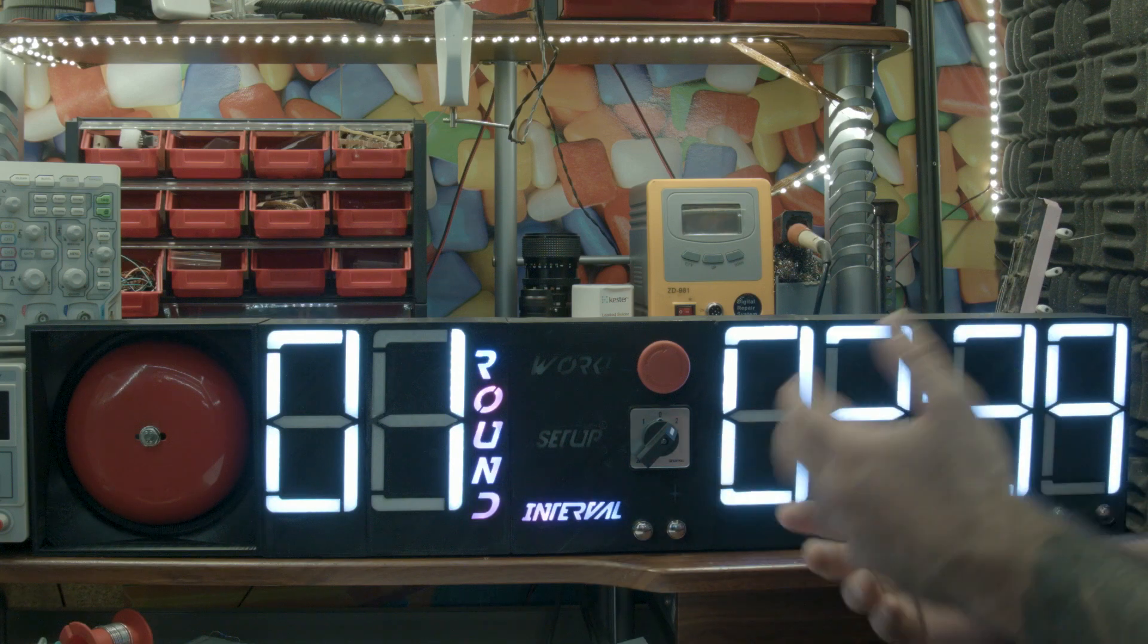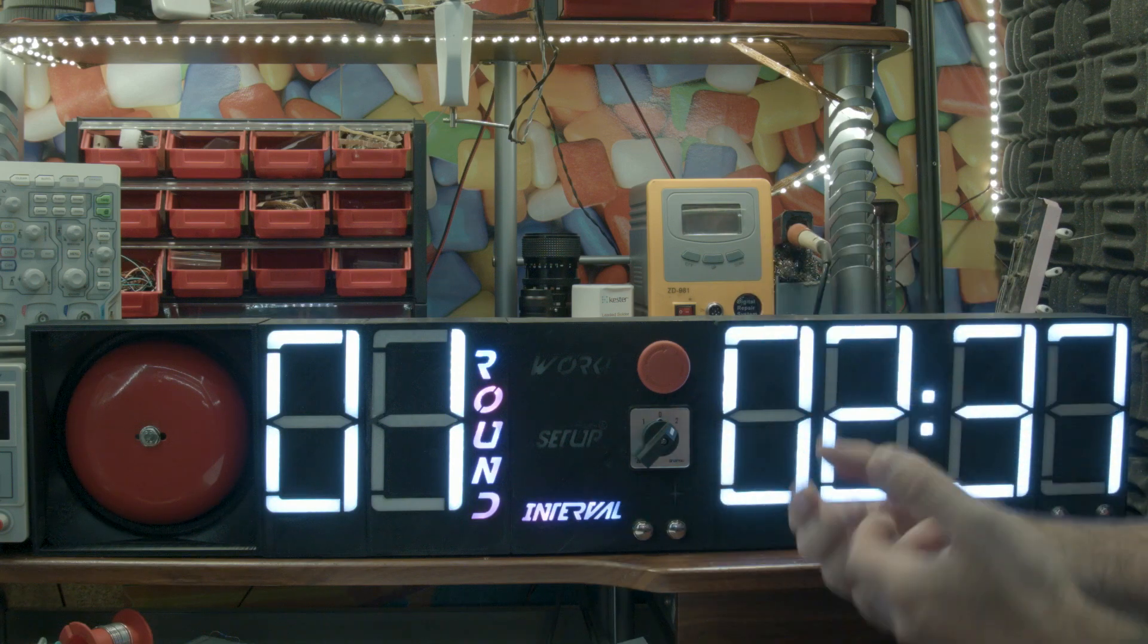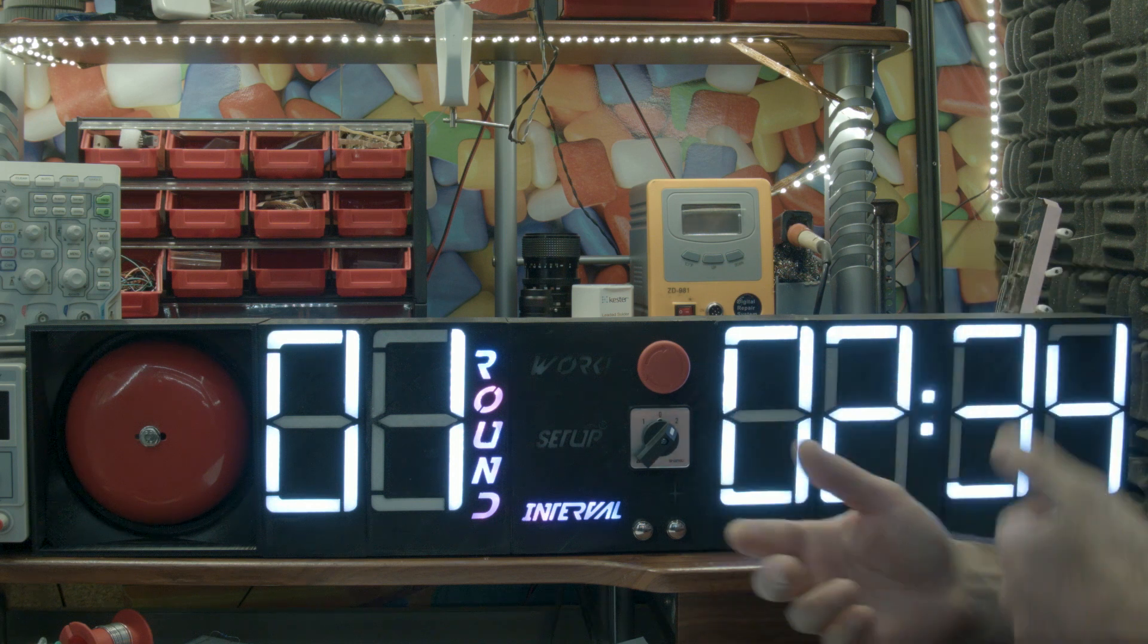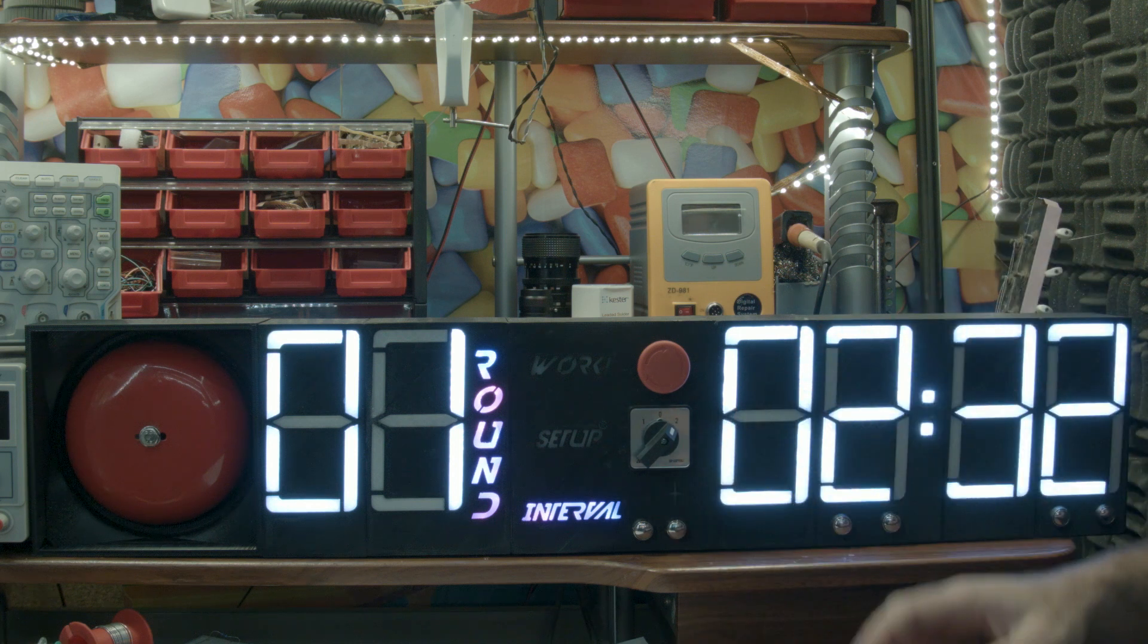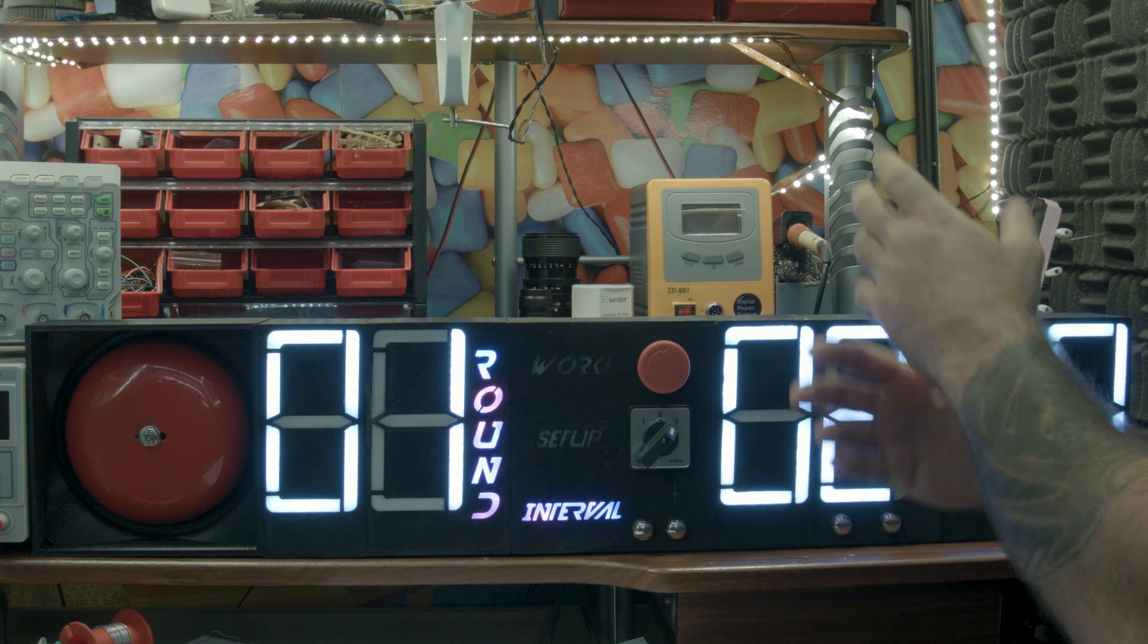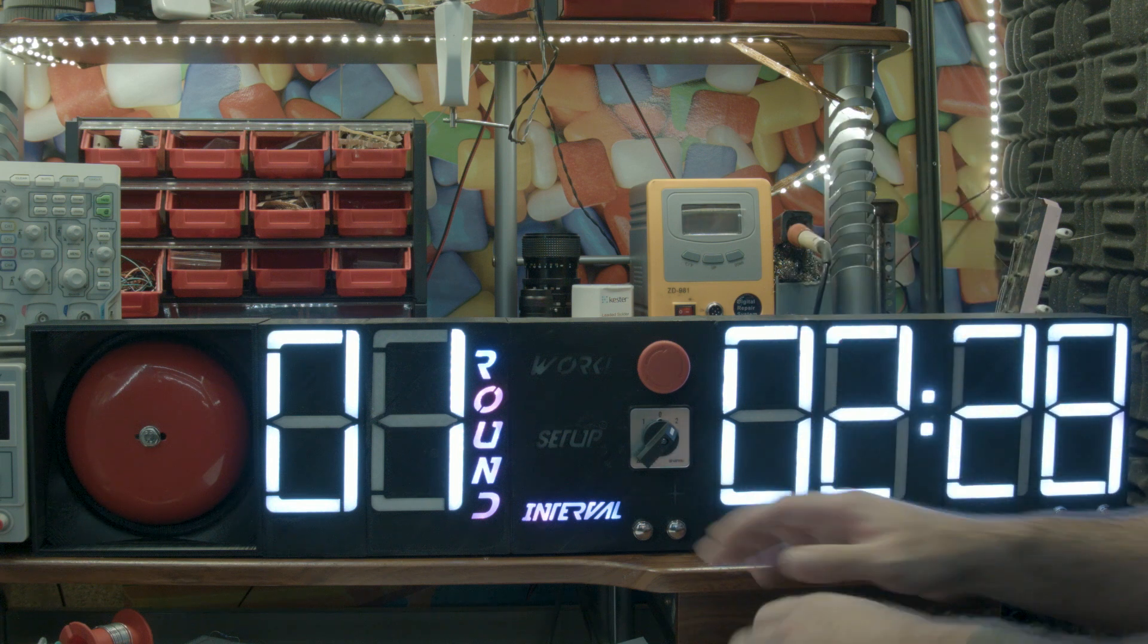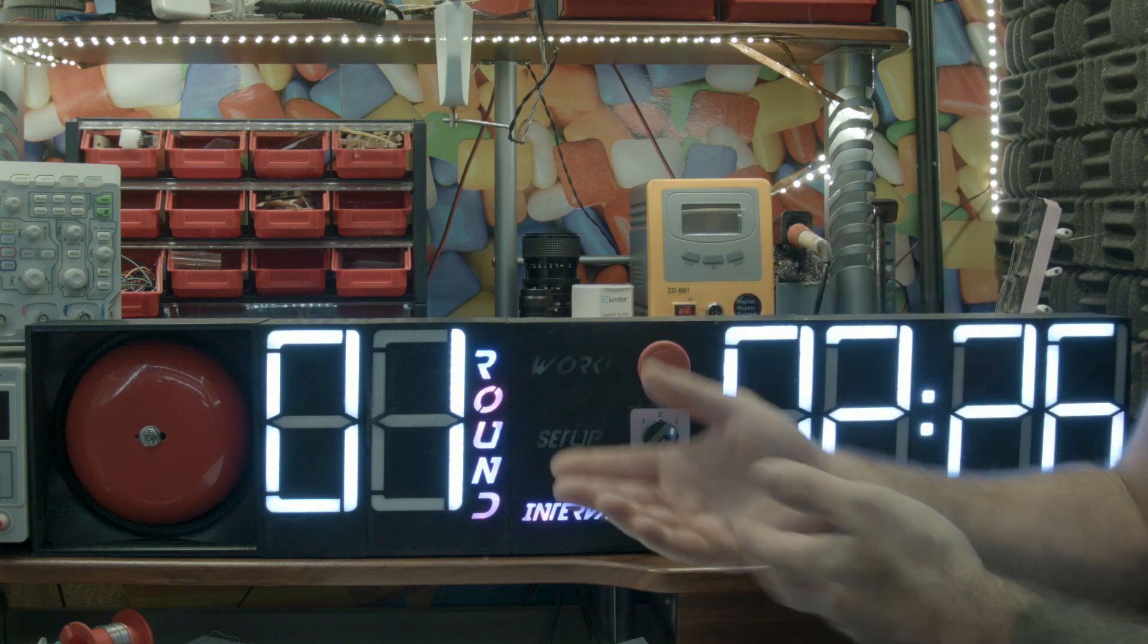So this will allow us to, for instance, sprint for 20 seconds, then go slower for 20 seconds, then again and again and again. And then when this switches to the resting period, it will not ring every 20 seconds.